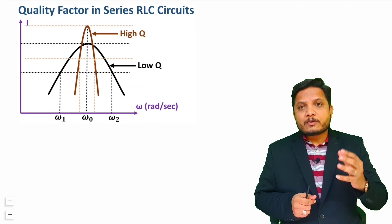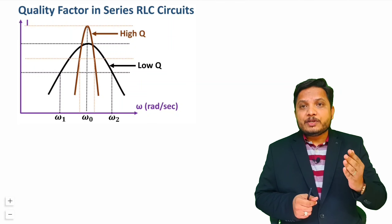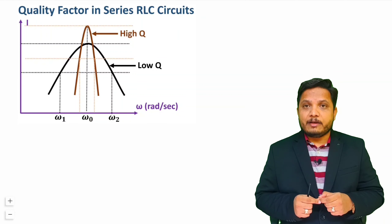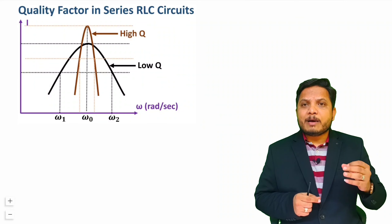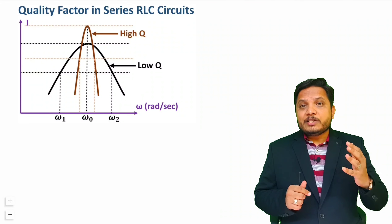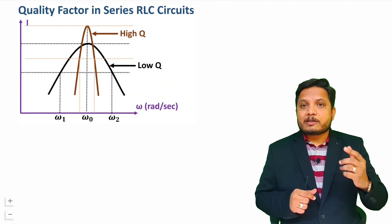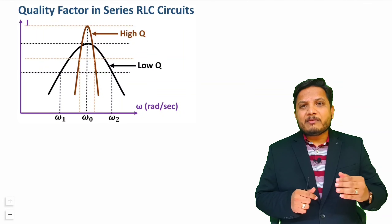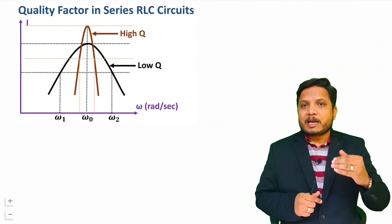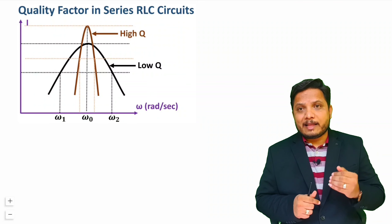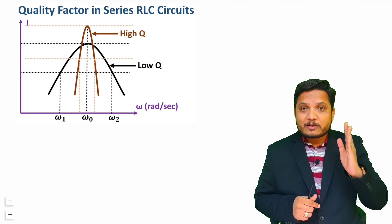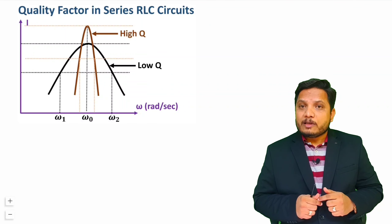My dear students, quality factor explains a ratio of center resonance frequency with respect to the bandwidth of the circuit. There are some other definitions as well, like it is initial energy stored with respect to energy lost in one cycle. But here we are not going to calculate it that way, so I won't go into that basic definition. I'll tell you quality factor calculation in electrical networks as per center frequency — that is resonant frequency divided by bandwidth of the network.